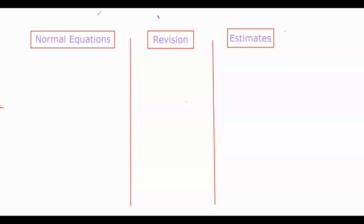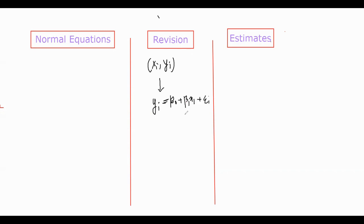Hello guys, so I am back with the normal equations. Let's revise a bit. We have this data x_i, y_i and we did this model: y_i follows beta0 plus beta1 x_i plus epsilon_i, where epsilon_i are independent and follow a distribution with mean 0 and variance sigma squared.